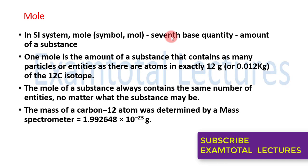Atoms and molecules are extremely small in size. If we take a small amount, for example one gram or two grams of an element, the number of atoms and molecules is very large. So a unit of convenient magnitude is required to handle such a big number, and that unit of convenient magnitude is the mole.